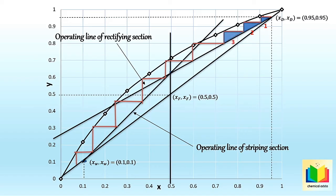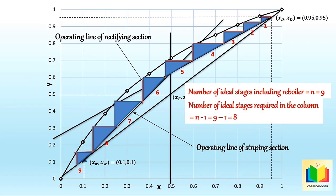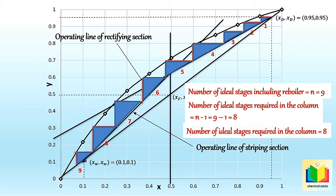Now we count the triangles between xD and xW. Each triangle represents one theoretical tray. In this graph, we get 9 triangles. Hence, the number of trays or ideal plates including the reboiler is N = 9. Therefore, the number of trays excluding the reboiler is N−1 = 9−1 = 8. Hence, the number of ideal plates required in this example is 8.